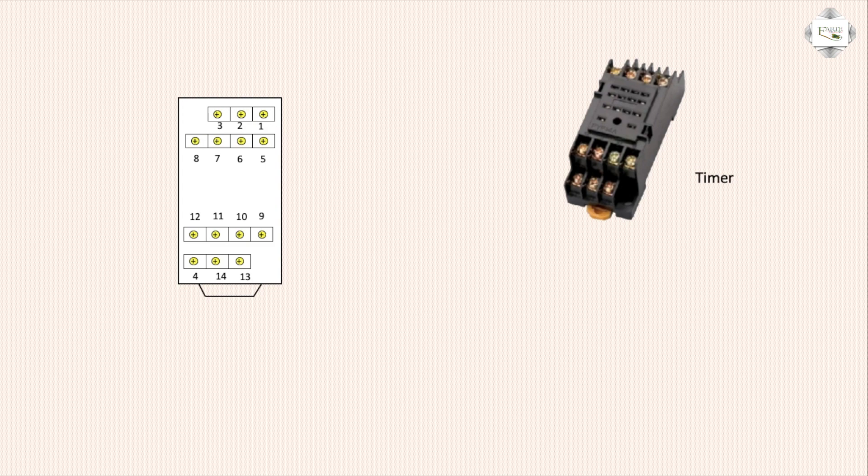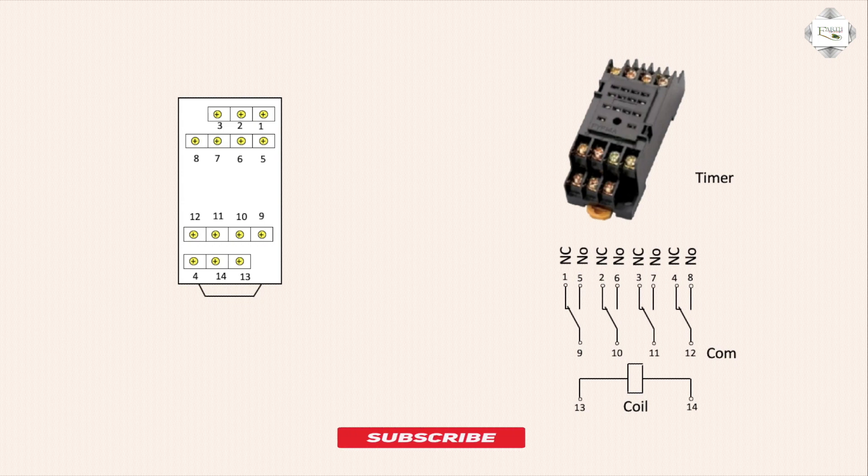Timer circuit terminals 30 and 14 are for timer coil connection. Terminals 9, 10, 11, 12 are common connection. Terminals 1, 2, 3, 4 are NC (normally closed) connection, and terminals 5, 6, 7, 8 are NO (normally open) connection.